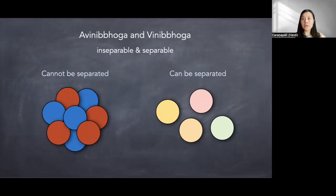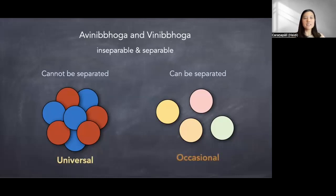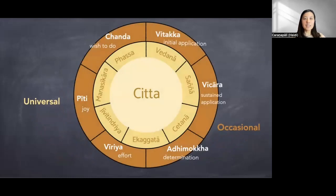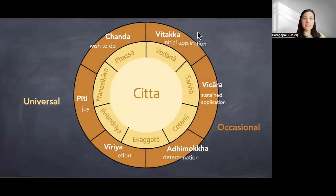When we study citta, we have citta that arise together with some kinds of universal cetasikas that must always be there — they always arise together and always pass away together. In terms of citta, those eight that cannot be further separated are like the universals. Those that sometimes can be there and sometimes not can be occasional. Just like in citta, there is a citta that must always arise with seven cetasikas — so eight of them must always arise together. Those occasionals are the ones that sometimes, depending on what kind of citta, can be there or cannot be there.